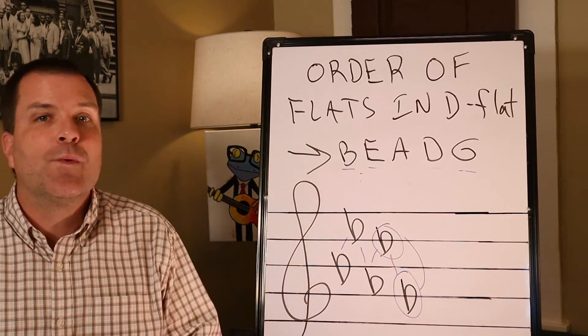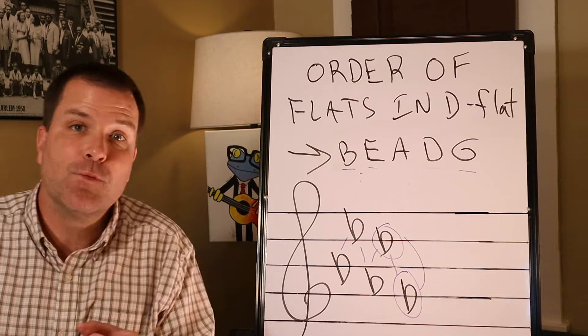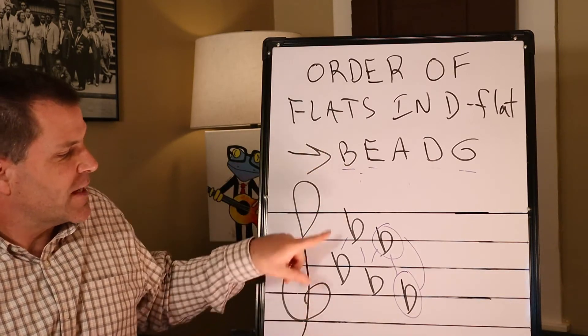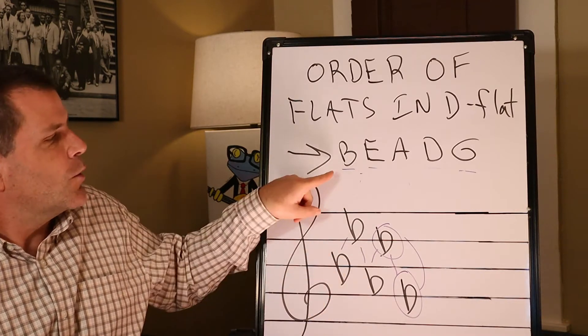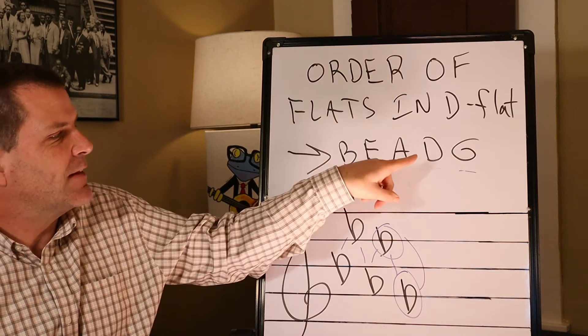The D-flat major scale - we need to understand the order of flats. Speaking of which, I have a video of that if you want to check it out. Some learners get confused when they see all this. The D-flat major scale in order: B-flat, E-flat, A-flat, D-flat, G-flat.